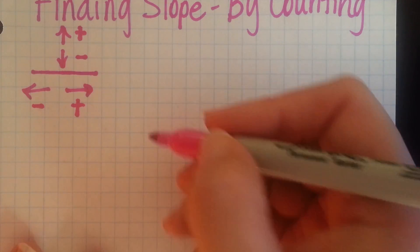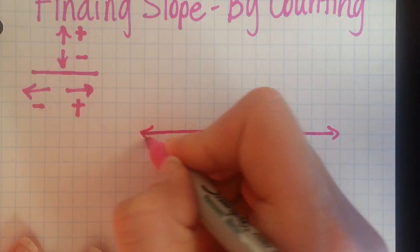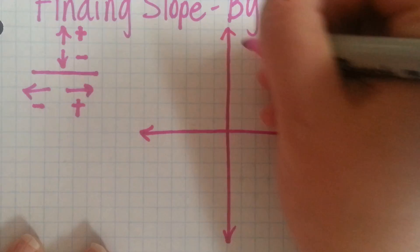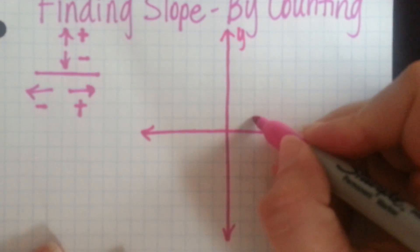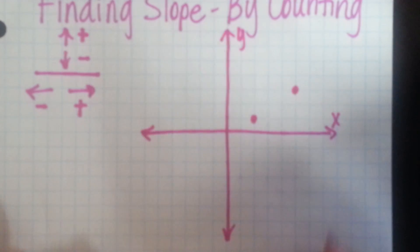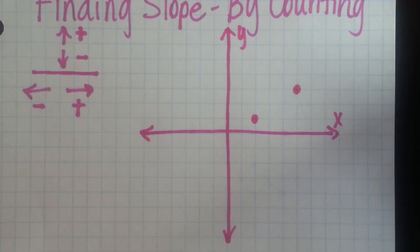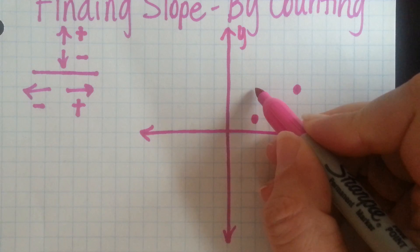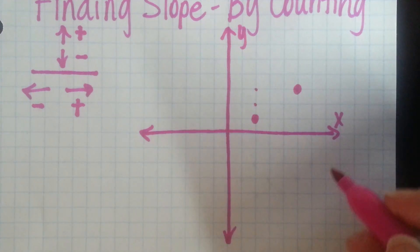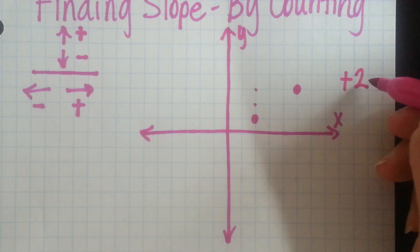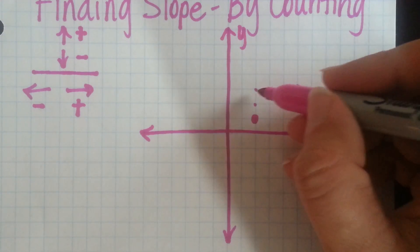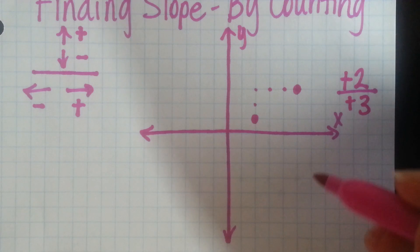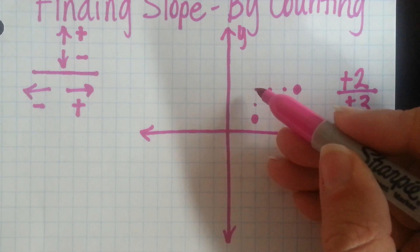So let's draw a coordinate plane and just give ourselves a couple of points. Say I have a point here and I have a point here. What I need to be able to do is to count from one point to the other — it doesn't matter which one we start with. Say I started with this one. I'm going to go up two, and then write down a positive two since I went up. That's going to be my numerator. Then I'm going to go over to the right three, so I'm going to have a positive three. This means my slope is two thirds.